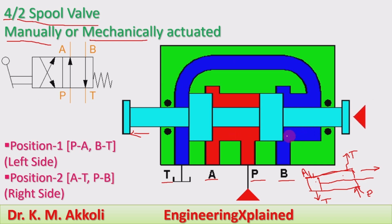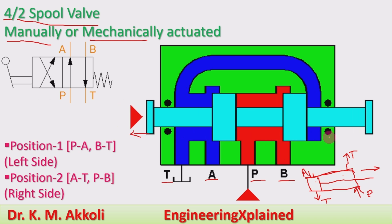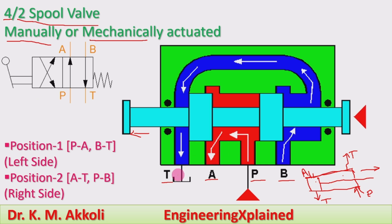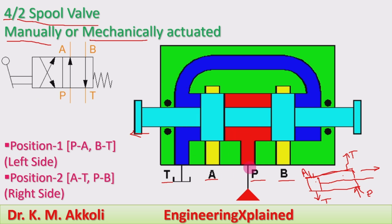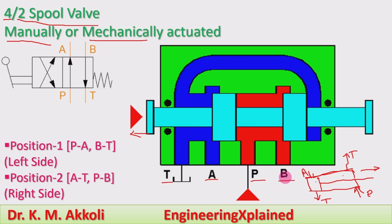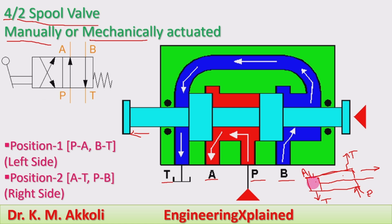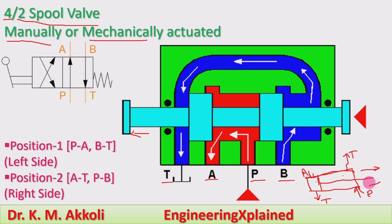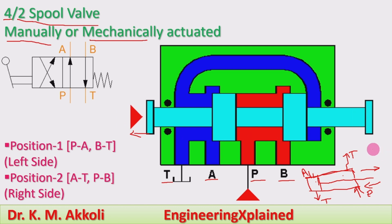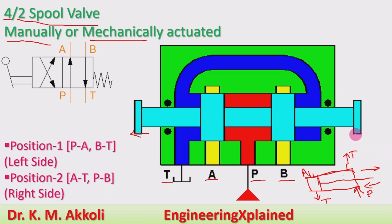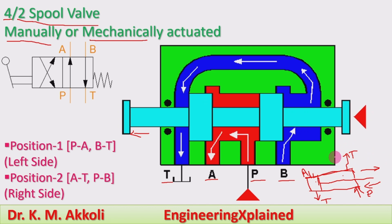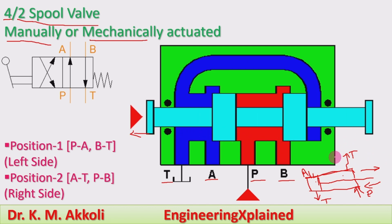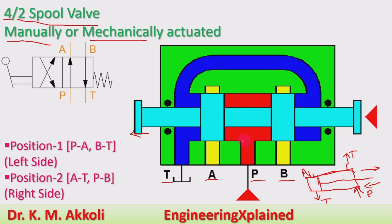Position two is the right side. When the spool is on the right side, the actuator line is connected to tank and the pump line is connected to the back port. This is the return stroke. Both strokes are power strokes here; the return will be quicker compared to the forward motion, which has more power.